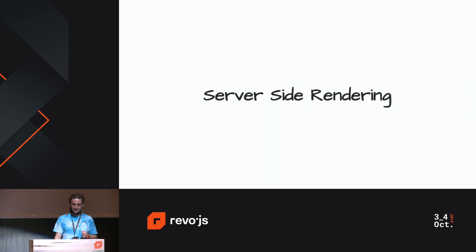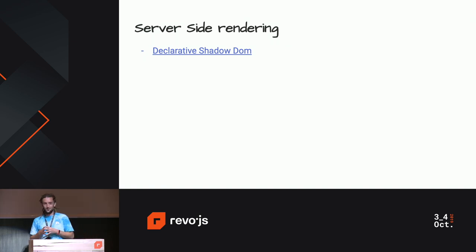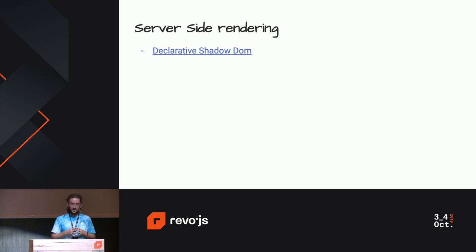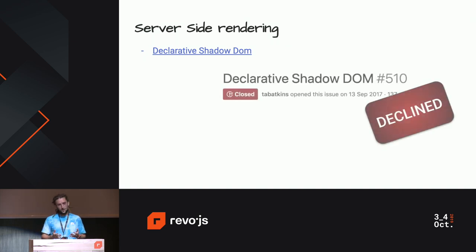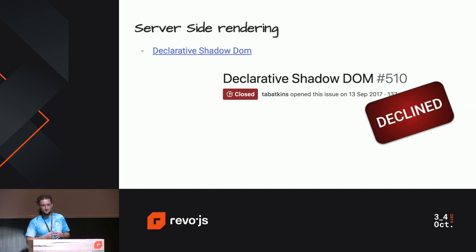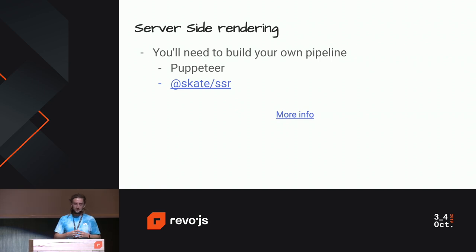Last issue: server-side rendering. There was a light at the end of the Shadow DOM tunnel called declarative Shadow DOM — an awesome proposal that would allow you to define all shadow roots declaratively, and with that, server-side rendering would just work without any tooling. But this proposal was declined. Server-side rendering is still possible — you need to build a pipeline around it with Puppeteer, or you can use the skate/ssr library.